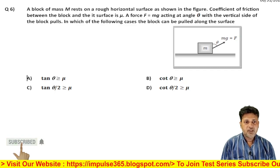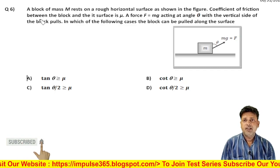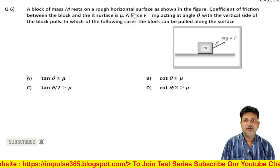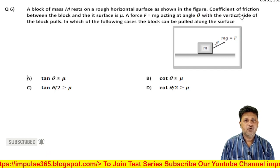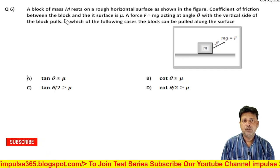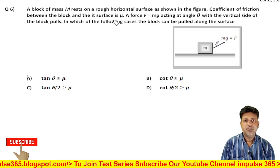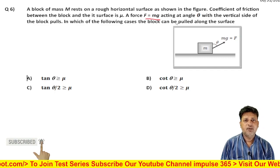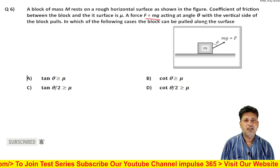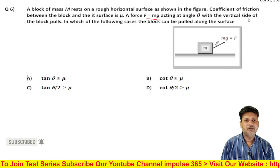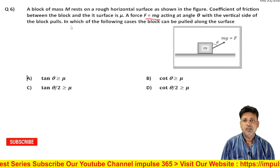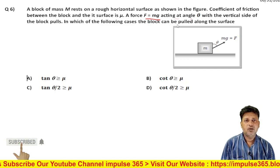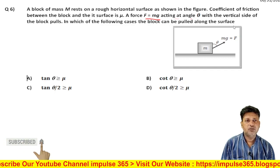The next question is: a block of mass M rests on a rough horizontal surface as shown in the figure. The coefficient of friction between the block and the surface is mu. A force F equal to mg acts at an angle theta with the vertical side of the block. In which of the following cases can the block be pulled along the surface?